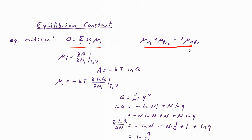Even if the gases are not ideal gases, or in other cases even if they're not gases at all, what's still true about the chemical potential is that it is the partial molar energy — in particular, the partial molar Helmholtz free energy under conditions of constant temperature and volume. Remembering the thermodynamic connection formula for the Helmholtz free energy: A = -kT log Q.